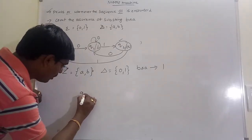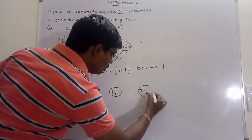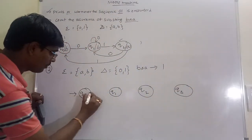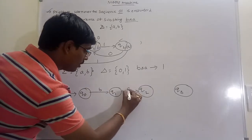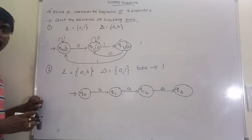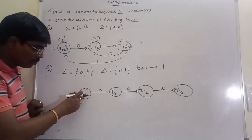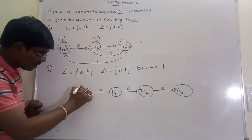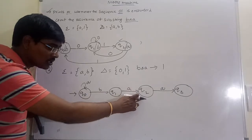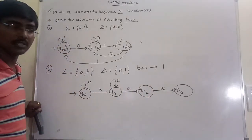First satisfy the minimum condition: the substring is BAA. Q0 on input B goes to Q1, Q1 on input A goes to Q2, Q2 on input A goes to Q3 — BAA is completed. Now for remaining transitions: Q0 on input A stays at Q0, since before BAA we can have any number of A's. Q1 on A: the substring BAA still needs to be formed, so Q1 on B goes back to form the pattern again.